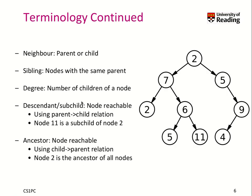So a tree has a lot more terminology compared to lists and queues, as you may have already figured, because that is already clear when you look at this hierarchical composition — it needs a bit more clarity in terms of organization. So what is a neighbor? A neighbor is a parent or child, because they are connected by an edge. Siblings are nodes with the same parent — so in this case, 5 and 11 are siblings because they have the same parent, node 6. The degree is the number of children a node has, so this node here has a degree of 2.